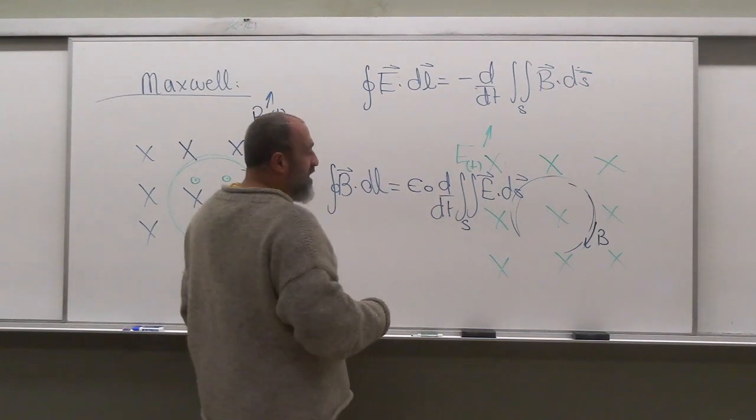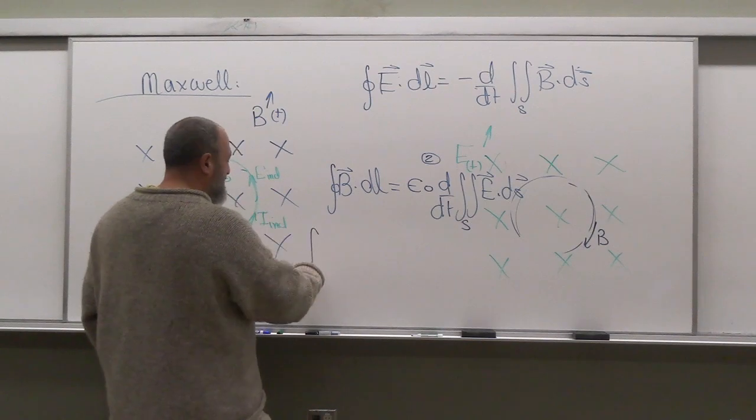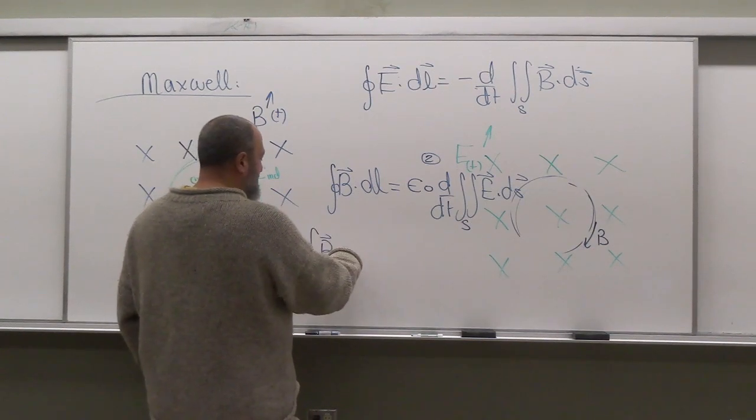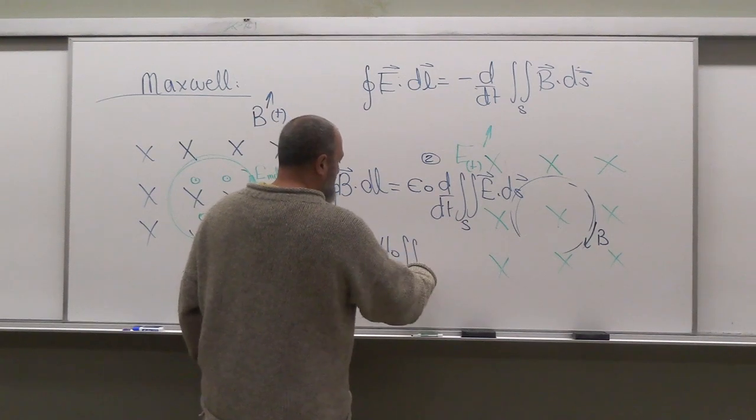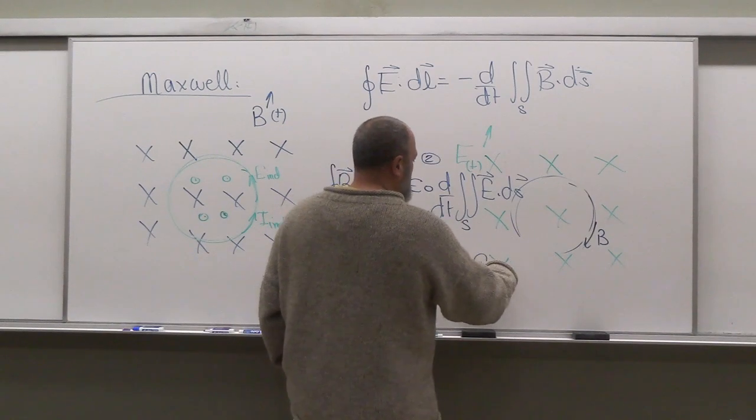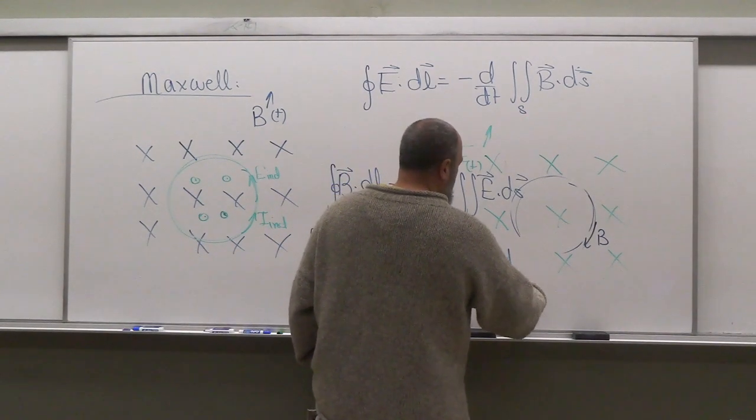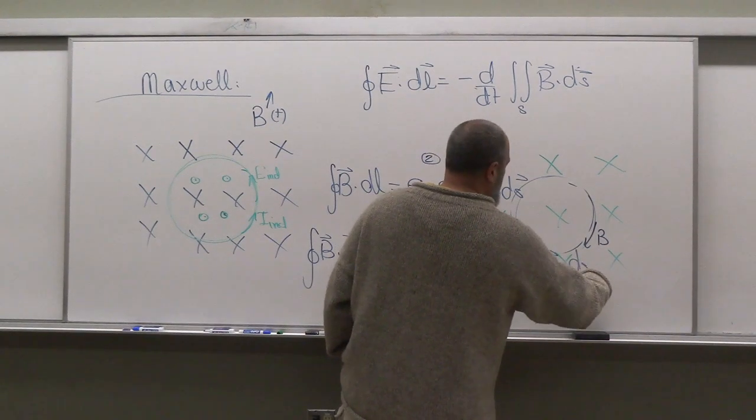So Ampere's law now has this other part to it, part two, that needs to be added in there. So you have now the integral of B dot dL equal to mu naught double integral of J dot dS plus epsilon naught d by dt of double integral E dot dS over the surface.